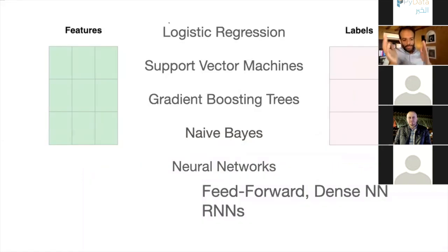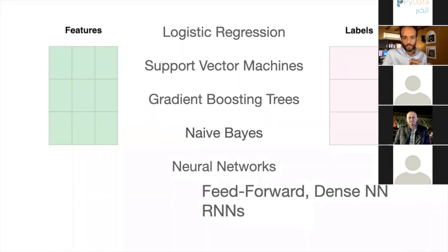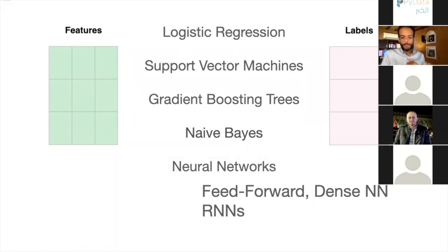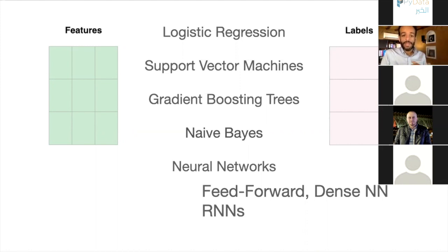The relationship between features and labels can be easy or complex. We have different types of models for making predictions. What we'll focus on are neural networks. RNNs used to dominate natural language processing, but the transformer model has been eating up NLP and dominating most tasks, and now it seems to be doing the same for computer vision.